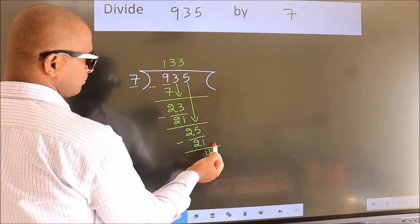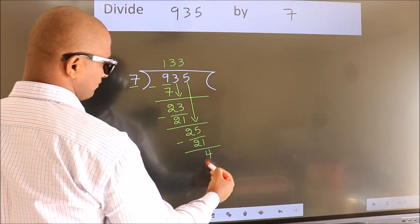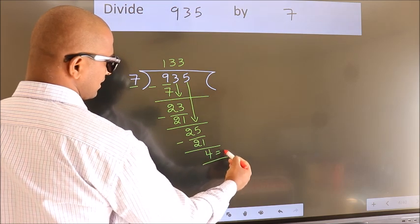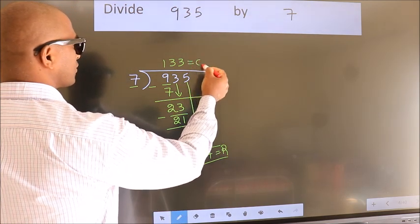No more numbers to bring it down. So we stop here. This is our remainder. This is our quotient.